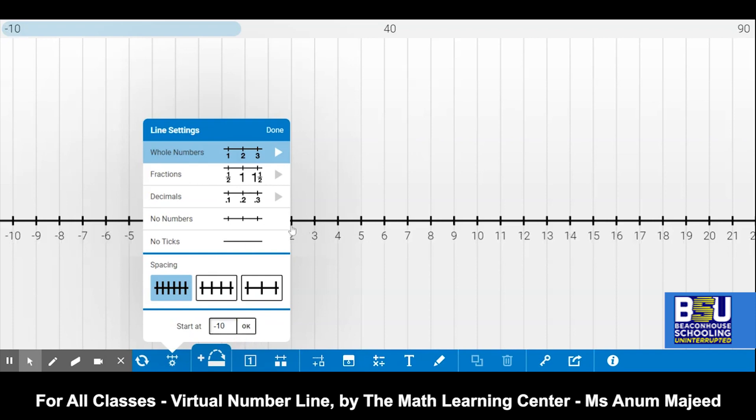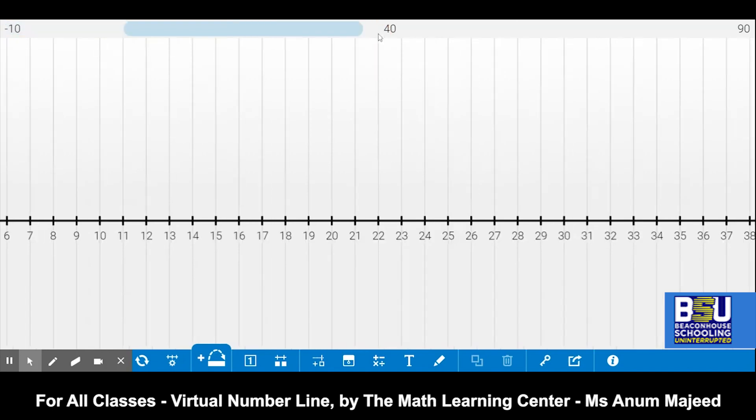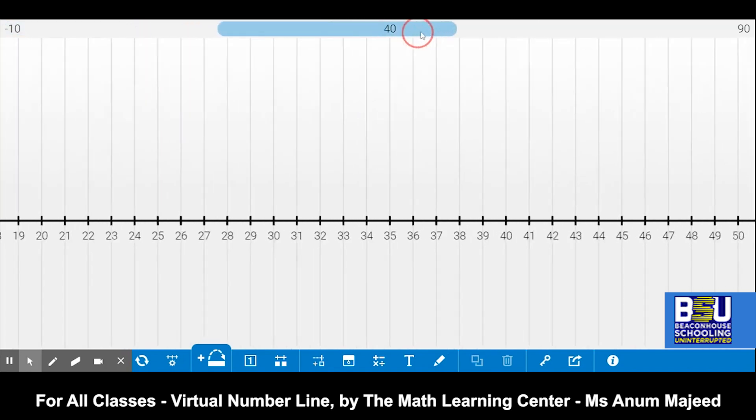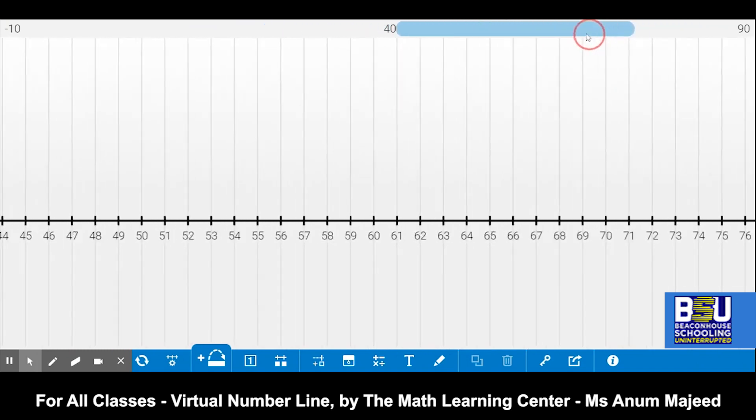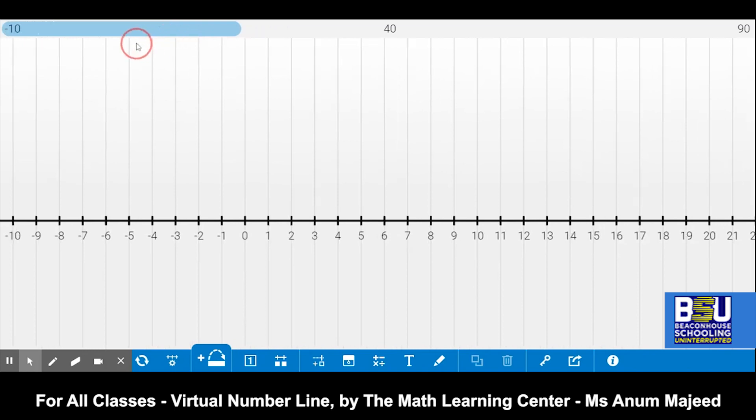Now see here, I have a number line which is showing negative numbers from minus 10 and then we have positive numbers till 21 and so on. If we move forward, we will see more. See here, this is the bar which we can use to scroll down the number line, I mean scroll horizontally, and see the range of the number line.